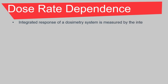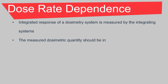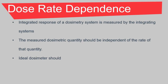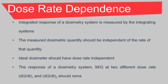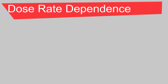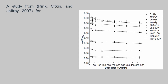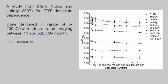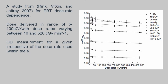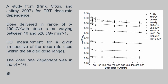The integrated response of a dosimetry system is measured by the integrating system. The measured dosimetric quantity should be independent of the rate of that quantity. An ideal dosimeter should have dose rate independence. The response of a dosimetry system M over Q at two different dose rates — dQ/dt1 and dQ/dt2 — should remain constant. A study from Rink, Vitkin and Jaffray in 2007 was done for EBT dose rate dependence. Dose was delivered in a range of 5 to 10 cGy with dose rates varying between 16 and 520 cGy per minute. Dose rate dependence was found to be approaching 1% with a standard deviation of 4.5%.